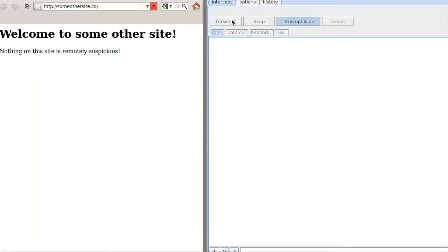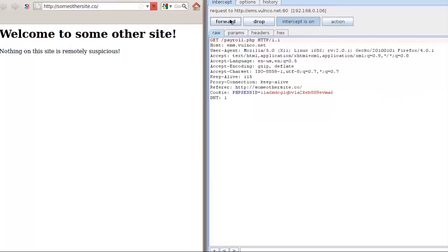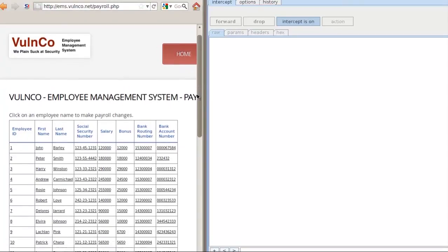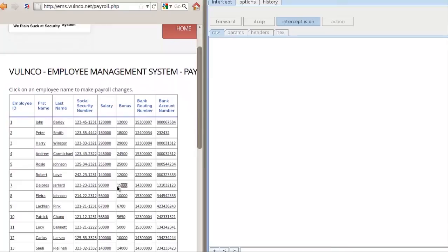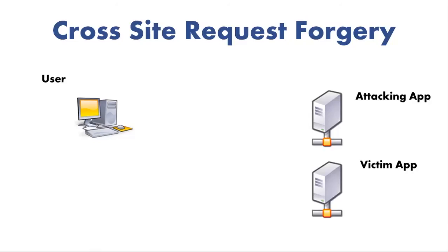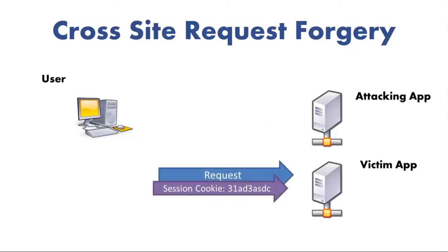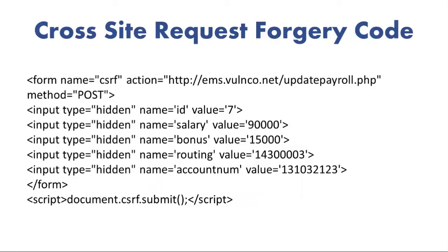We forward this request on in the proxy to allow it to complete. As the application flow completes, we're returned to the payroll landing page. The result? Dolores now has an increased bonus thanks to a cross-site request forgery. Let's recap how that worked. First of all, the victim made a request to the attacking application. The attacking app returned some code, including the CSRF portion. Finally, this triggered a forged request to our victim application, which was associated with the session cookie. This happened thanks to a hidden HTML form and a simple bit of JavaScript.